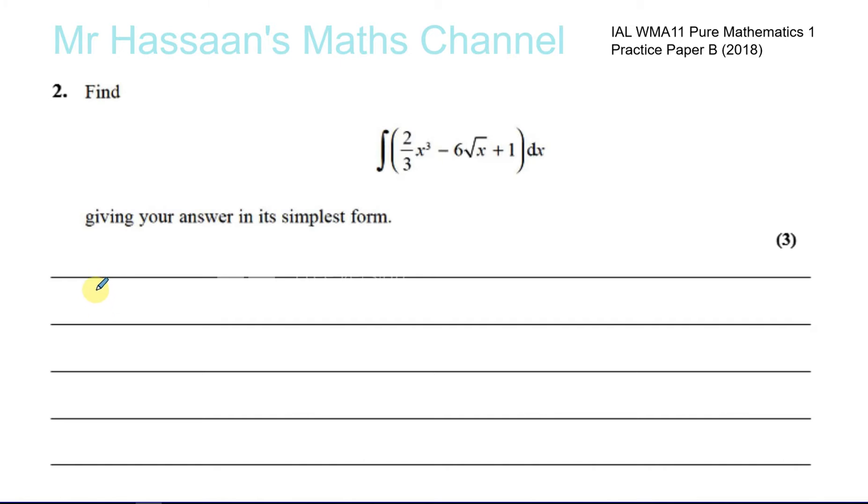So what we have to integrate, I'm going to rewrite it in a form which is ready for us to integrate. So I'm going to integrate 2 over 3x cubed minus, now this x term should be written in index form. So x to the power of a half instead of the square root of x plus 1 and all of that has to be integrated with respect to x. Don't forget the bracket.